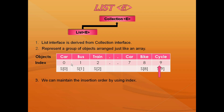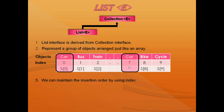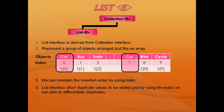If you notice here, there are duplicate objects also — one car object and here also the same car object, so it is a duplicate. How can we differentiate? We can differentiate by means of index. This car object is located at 0th index and this car object is located at 7th index. So list interface allows duplicate values to be stored, and by using the index we can differentiate duplicates. These are the properties of list interface.